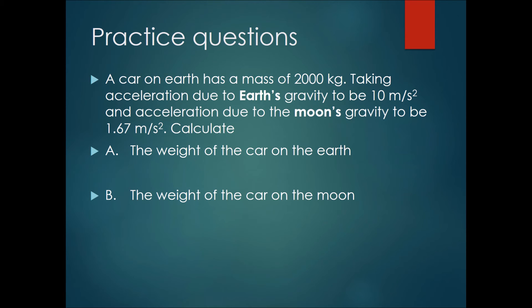Okay, let's go to the answers. The weight of the car on the earth would be W equals mg. The mass is 2000 kg and the gravity on earth is 10. Therefore the weight of the car on the earth would be 20,000 newtons.